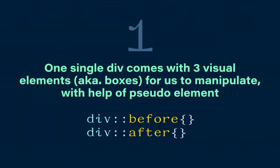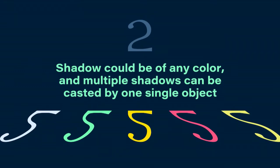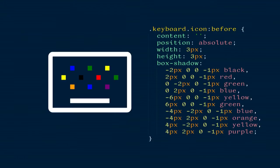I want to give a few points as common knowledge before we dive into live coding. I'm sure you're all very sassy about CSS, so just bear with me. The first thing is that one single div comes with three visual elements — aka three boxes — to manipulate with the help of pseudo-elements, before and after. Second is that shadow could be of any color, and multiple shadows can be cast by one single object — like this colorful keyboard drawn with many shadows in different colors.